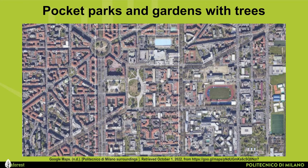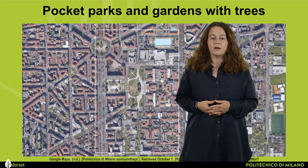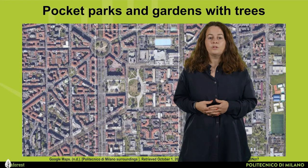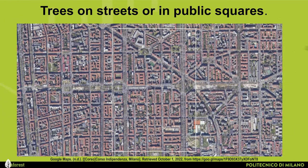The third typology comprises pocket parks and gardens with trees less than 0.5 hectares. Those are small district parks equipped with facilities for recreation or leisure, and private gardens and green spaces. The map shows, for instance, the area surrounding Politecnico di Milano with the different small parks around the area.